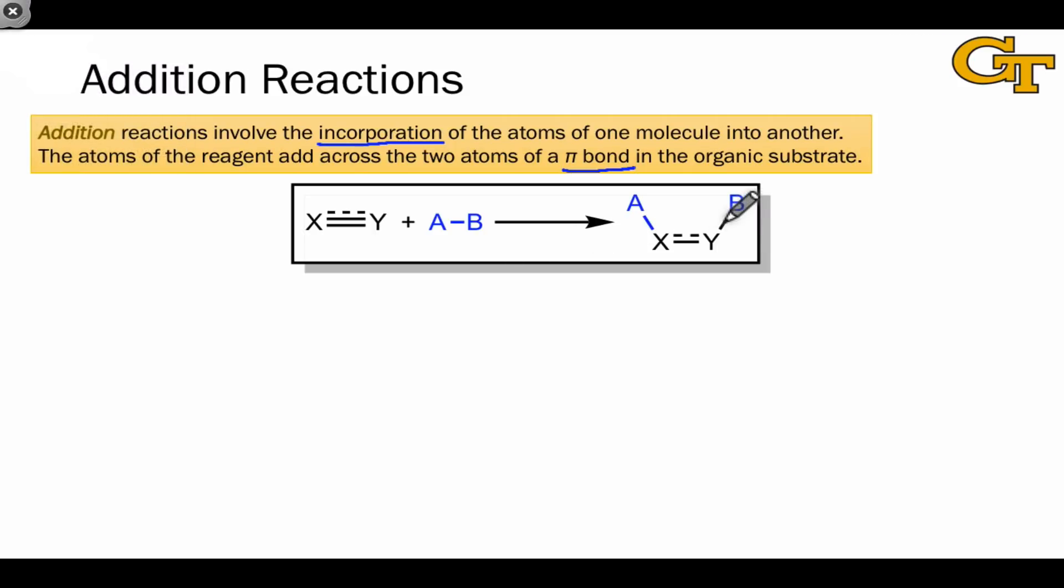For example, in this general picture, we see that the bond to B, the bond between B and Y, came from the X, Y, double or triple bond. That's why it's colored black. While the other bond in the product, here between X and A, comes from the reagent, from AB.